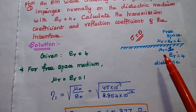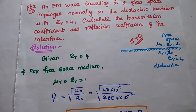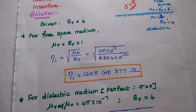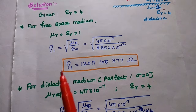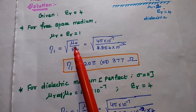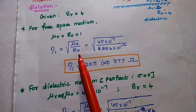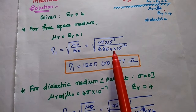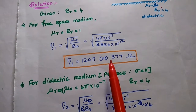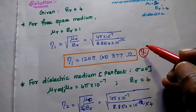In this case, mu r equal to 1 and epsilon r equal to the given value 4. First we find eta 1 and eta 2. For free space, mu r equal to epsilon r equal to 1, so eta 1 is equal to square root of mu naught by epsilon naught. With mu naught equal to 4π × 10⁻⁷ and epsilon naught equal to 8.854 × 10⁻¹², the answer is 120π or 377 ohm — the intrinsic impedance for free space.